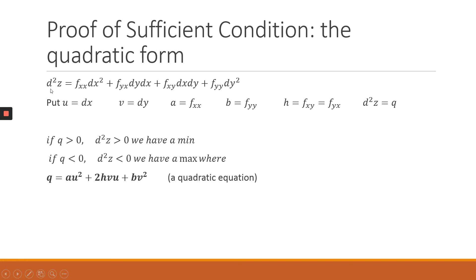Substituting back, the second total differential becomes q = au² + 2huv + bv². For fxx we substitute a, and for dx we substitute u, so that term becomes au². The cross partial fyx is h, dy is v, and dx is u, giving huv; combining both cross-partial terms gives 2huv. The last element fyy is b and dy squared is v², giving bv².